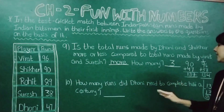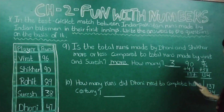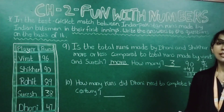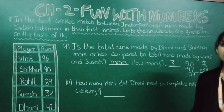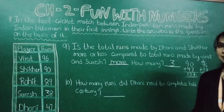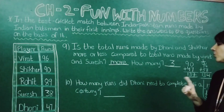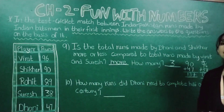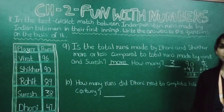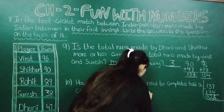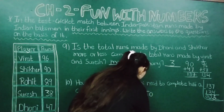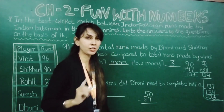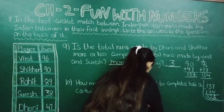Now moving to the next question: how many runs did Dhoni need to complete half a century? When it is asked about half, it talks about 50. Dhoni has made 47 runs. So we will just subtract from 50 — 50 minus 47 we will do. Now from 0, 7 cannot go, so we will borrow from 5.